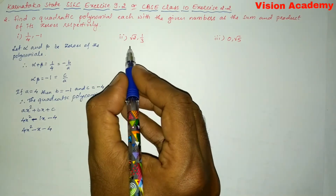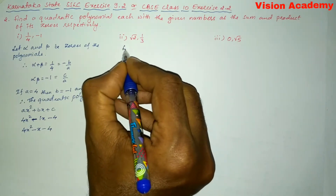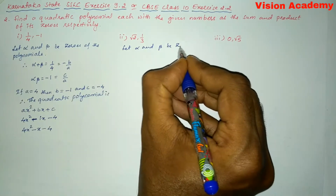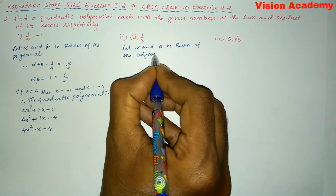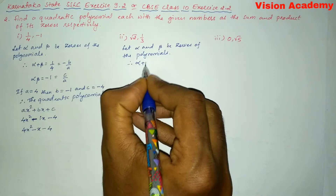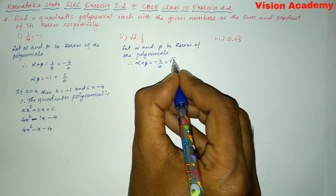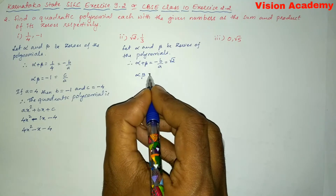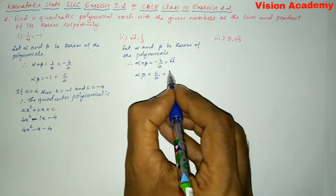Now let us move on to Roman number two: square root of two comma one by three. Again, let alpha and beta be the zeros of the polynomial. Therefore, as per the given data, alpha plus beta is equal to minus B by A, which equals square root of two. And alpha into beta, the product of zeros, is C by A, which equals one by three.